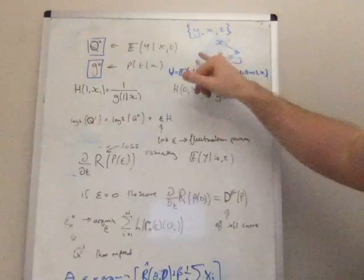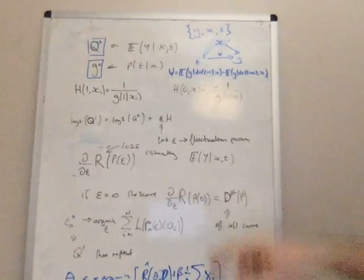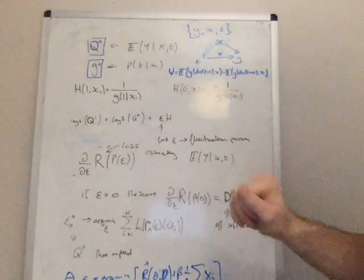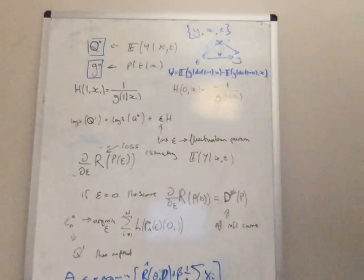But in reality, there's always going to be some residual bias, which means that if we plug in this estimator for the expectation of the outcome given covariates and treatment into this estimator for the parameter of interest psi, we're actually always going to get some residual bias. So we want to be able to deal with that bias.